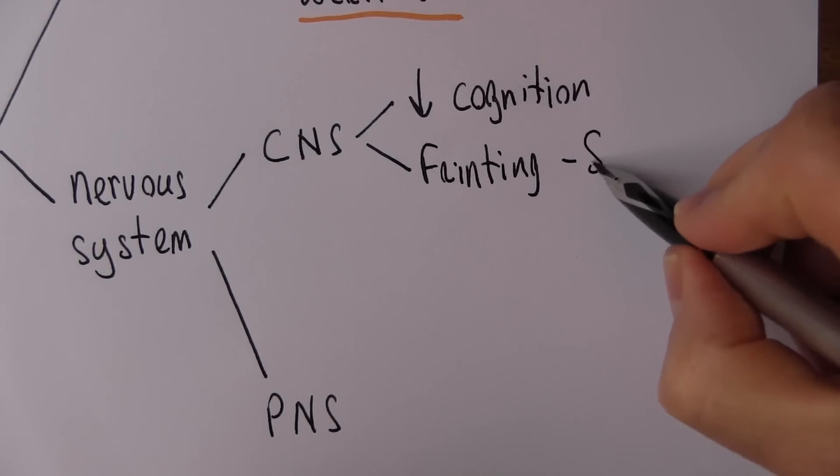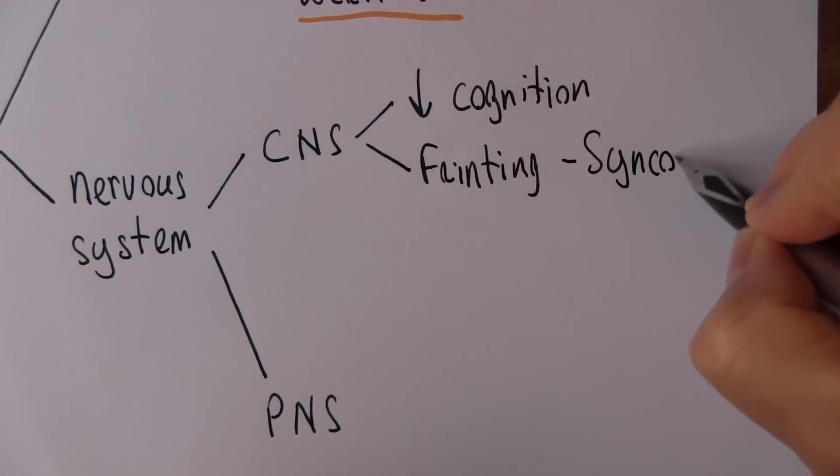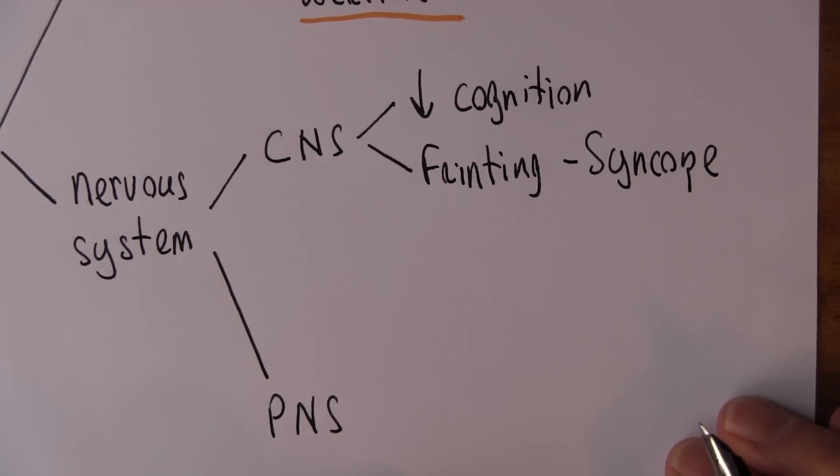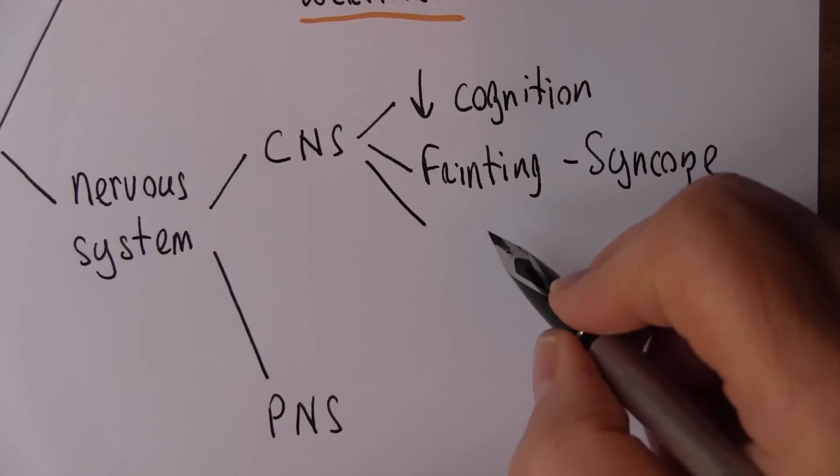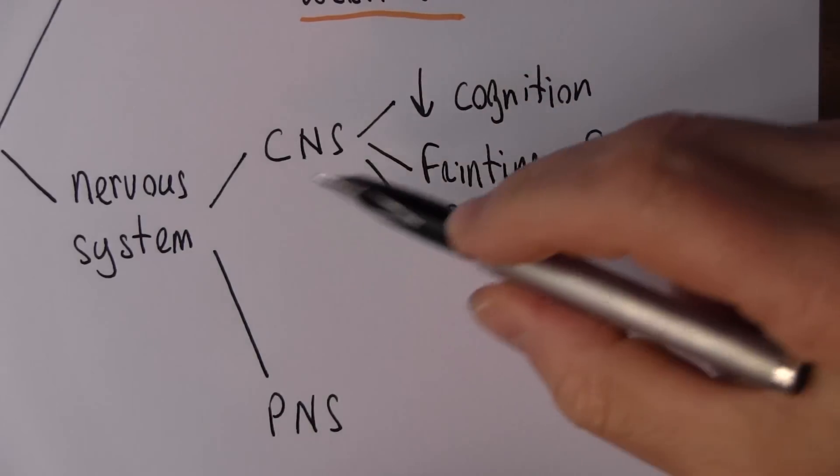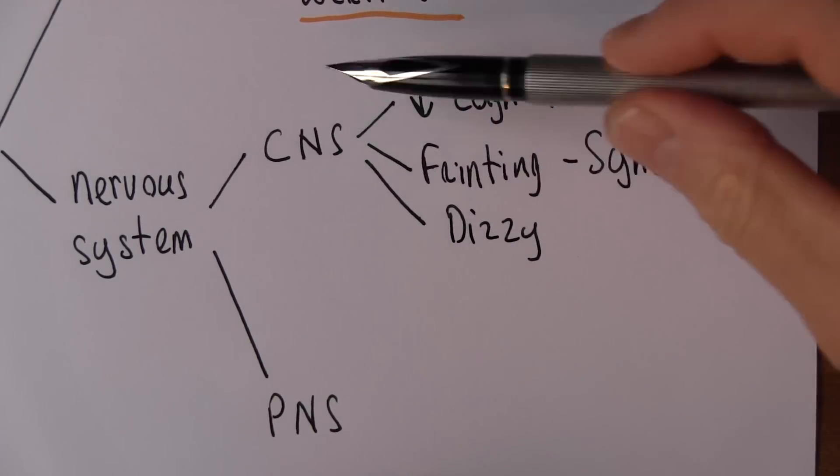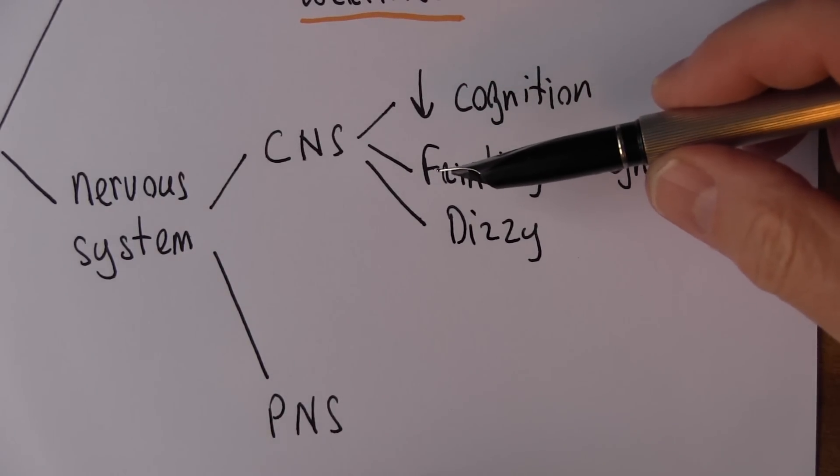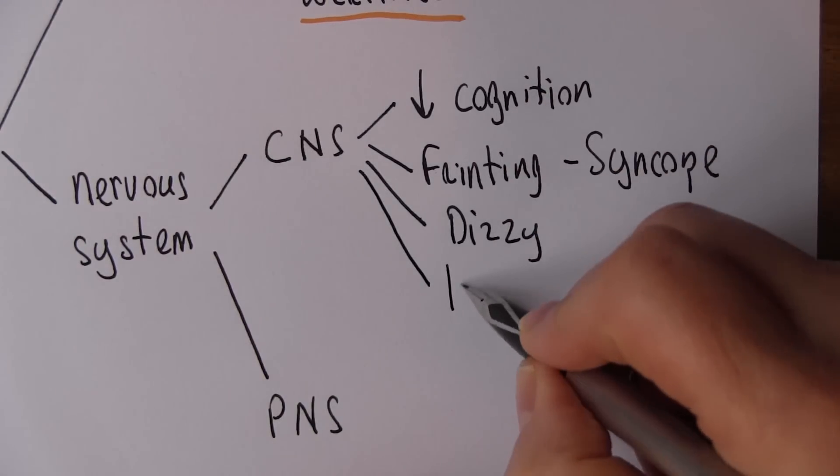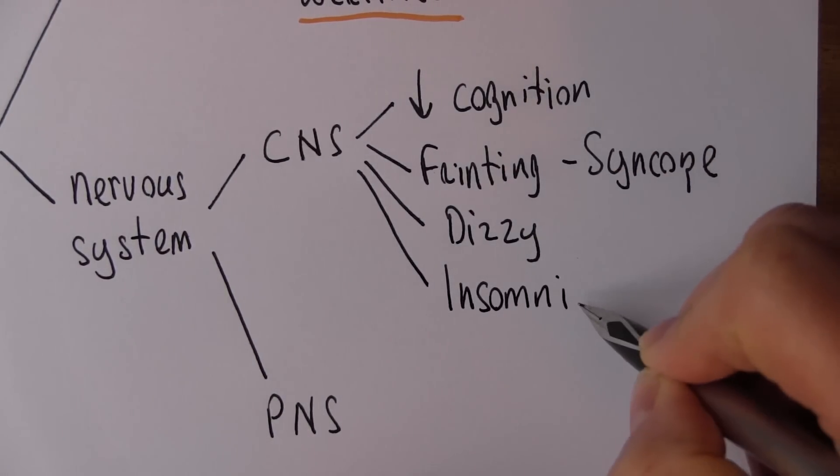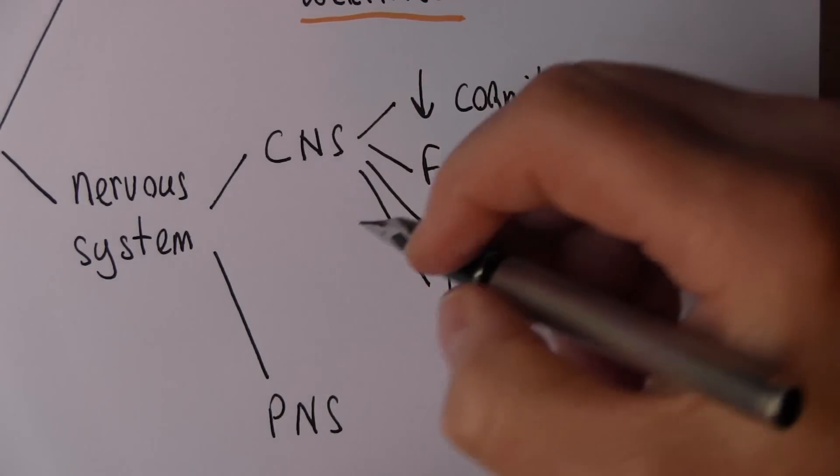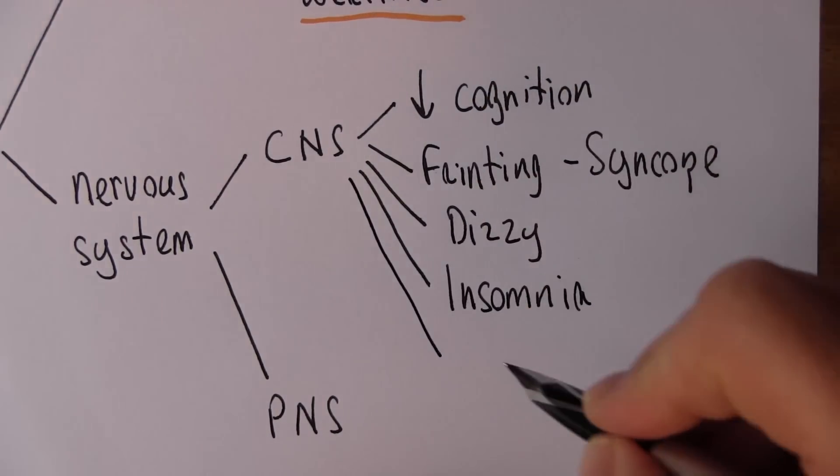The correct word for that is syncope: fainting. Short of fainting, there can be dizziness. A person can feel dizzy because there's not enough oxygen getting to the brain to generate normal brain activity. Another one is insomnia. People have difficulty sleeping if they're anemic.